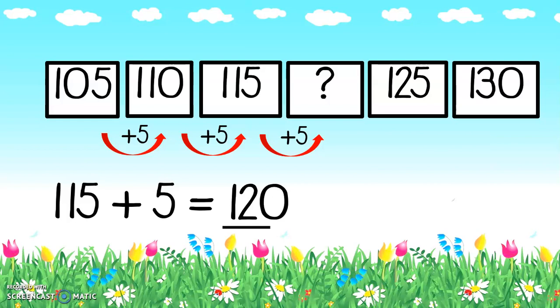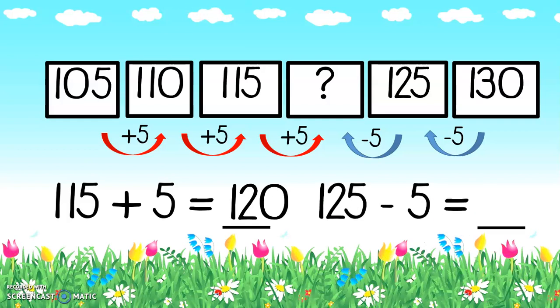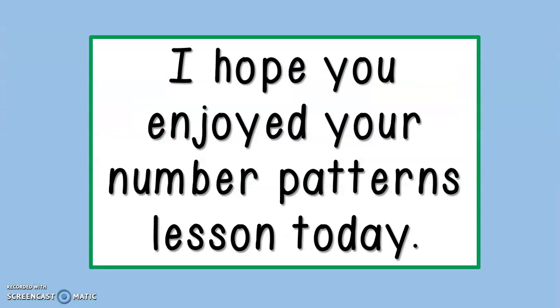But let's try counting backwards from one hundred and thirty to see if we can also get the answer. So I'm at one hundred and thirty — I'm going to minus five because we're jumping back in fives. So one hundred and thirty minus five gives me one hundred and twenty-five. Minus five gives me one hundred and twenty. Well done, great twos! I hope you enjoyed your number patterns lesson today. Remember to complete your homework, and if you have any questions, just ask your teacher.